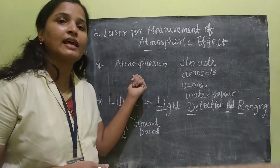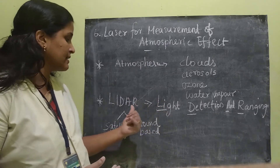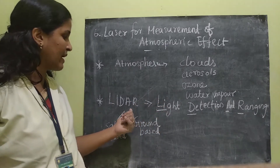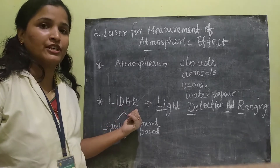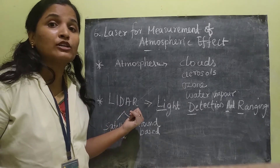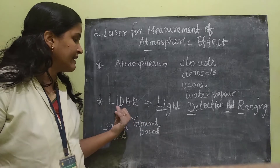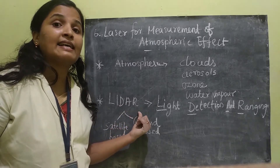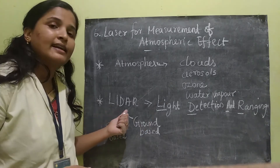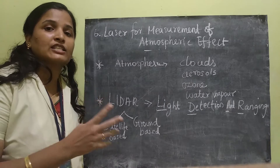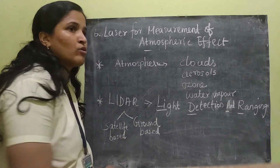The main laser-based device used for this purpose is LIDAR — Light Detection and Ranging. It is very similar to radar, and because of that, LIDAR is also called laser radar. LIDAR is classified into two types: one is satellite-based and another one is ground-based.